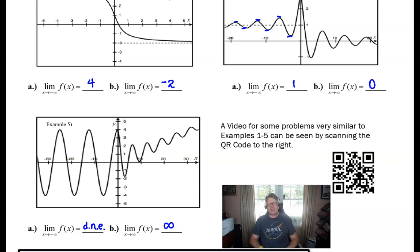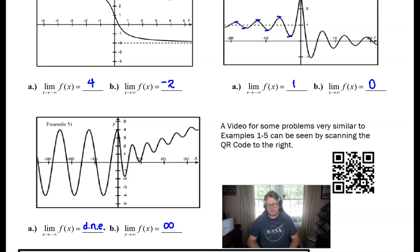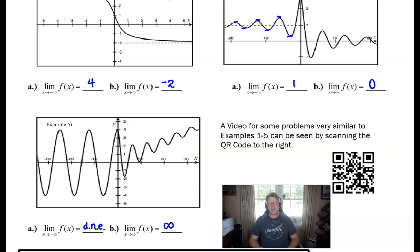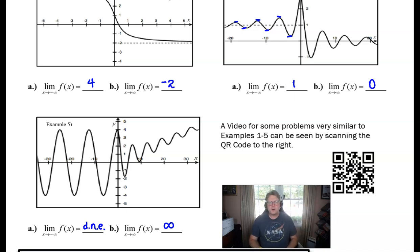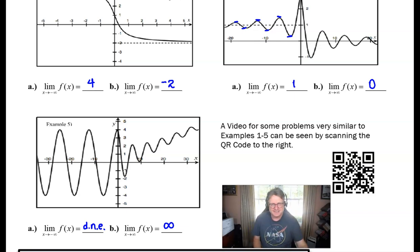There are a few other similar problems available via the QR code in the notes, but if you understand these five examples you've got a solid grasp of how the limit as x approaches an unbounded value — infinity or negative infinity — produces an answer. Stick around for the next few videos in this series and we'll talk more about horizontal asymptotes and how they connect to calculus. See you next time.